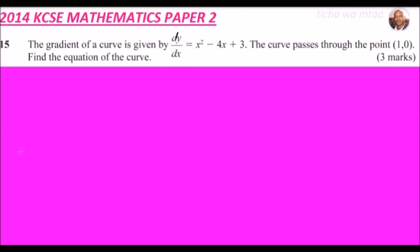2014 Paper 2, question number 15. We are told the gradient of a curve is given by dy/dx = x² - 4x + 3, and the curve passes through the point (1, 0). Find the equation of the curve.